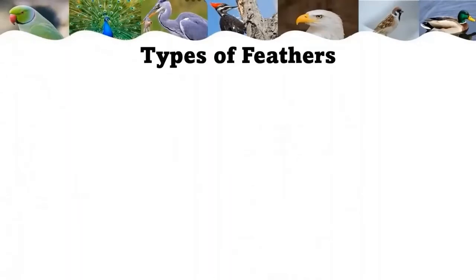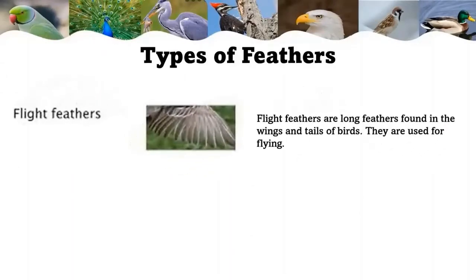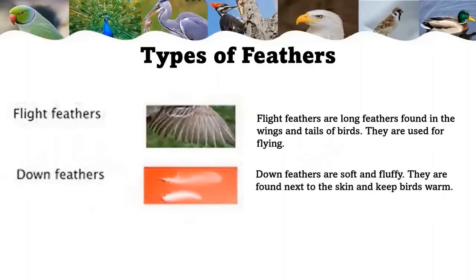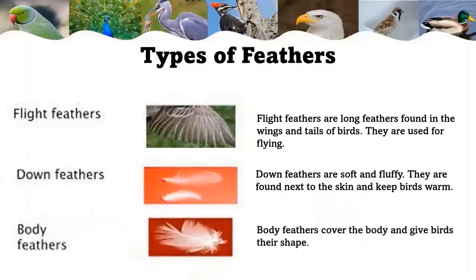Types of feathers. Birds have three kinds of feathers. Flight feathers are long feathers found in the wings and tails of a bird, and they are used for flying. Down feathers are soft and fluffy, found next to the skin, and keep birds warm. Body feathers cover the body and give birds their shape.